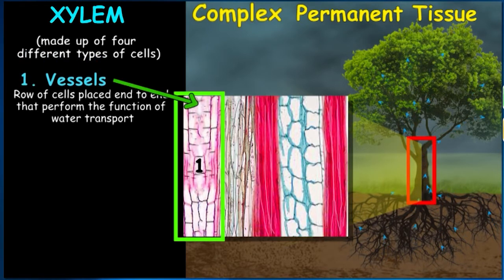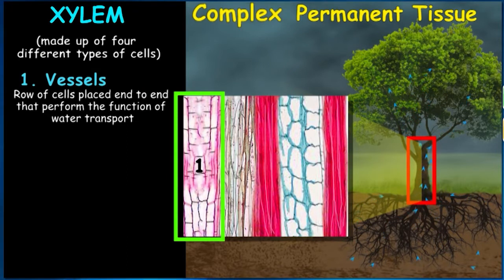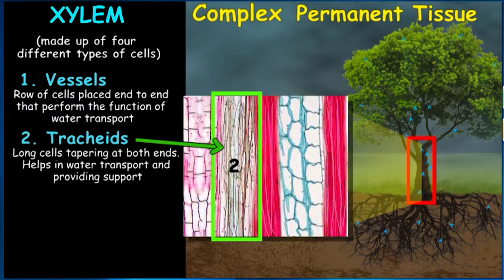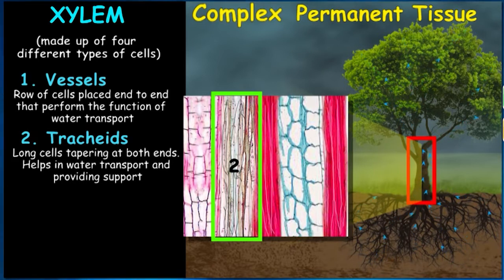The first type of cell in xylem is vessels, which are the most important cells in this tissue. Structurally, they are like a row of cells placed end to end, specialized in performing the function of water transport. The second type is tracheids, which are long cells that taper at both ends. These cells not only aid in water transport but, because of their structure, also provide support to the plant.